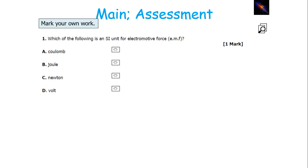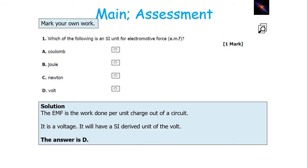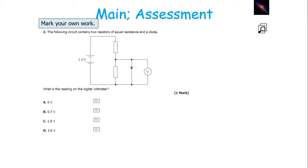In this first particular question: which of the following is an SI unit for the electromotive force? From the options given, it's not asking for an SI base unit, so therefore it must be an SI derived unit. The EMF is the work done per unit charge into a circuit, so therefore it's the voltage. It will have an SI derived unit of the volt, so the answer will be D.